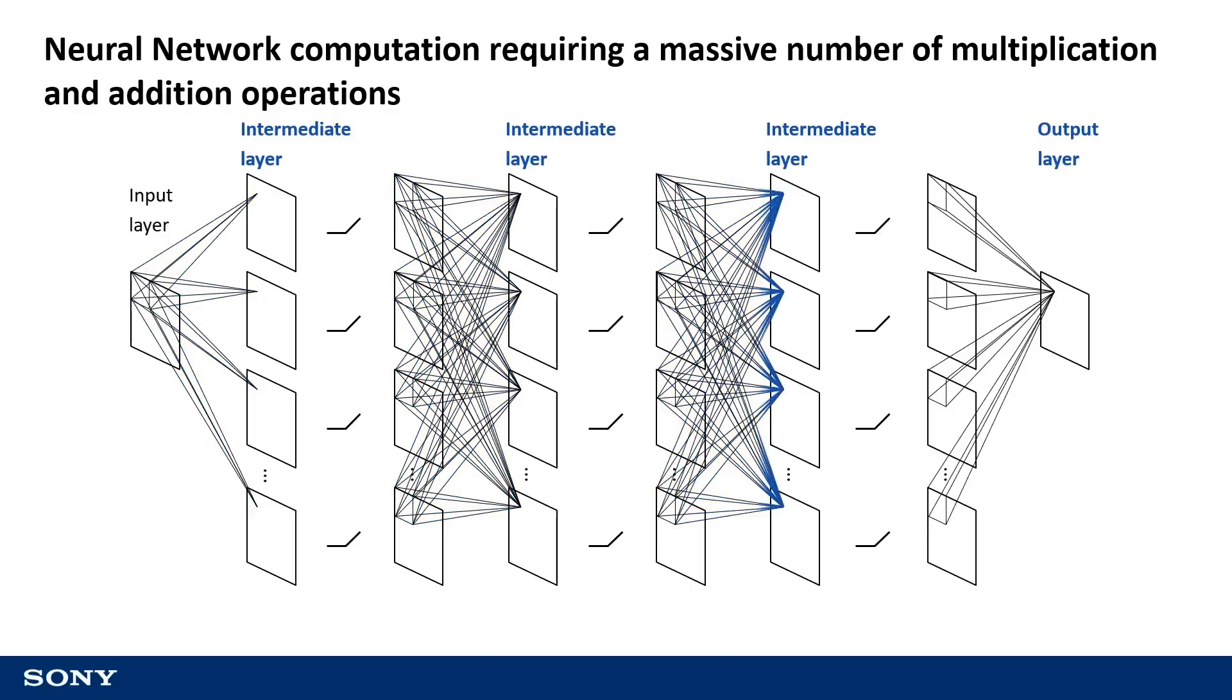As has been discussed in previous videos, neural network computation requires a massive number of multiplication and addition operations. Some neural networks require billions of multiplication and addition operations to perform a single calculation. If using trained models to make an inference without ensuring that calculations are performed efficiently, the time to complete the calculation could be quite significant.